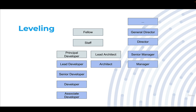Above this level, some companies continue to have individual contributor tracks with titles like principal developer, lead architect, or senior architect — equivalent to someone above the regular manager position, sometimes called a senior manager. At some companies the IC track ends here. For technology companies, they'll typically have ranks above that — above a senior manager you'll find a director of some sort, and on the IC side, staff engineering positions like staff architect or staff developer, equivalent to a director in terms of leveling.